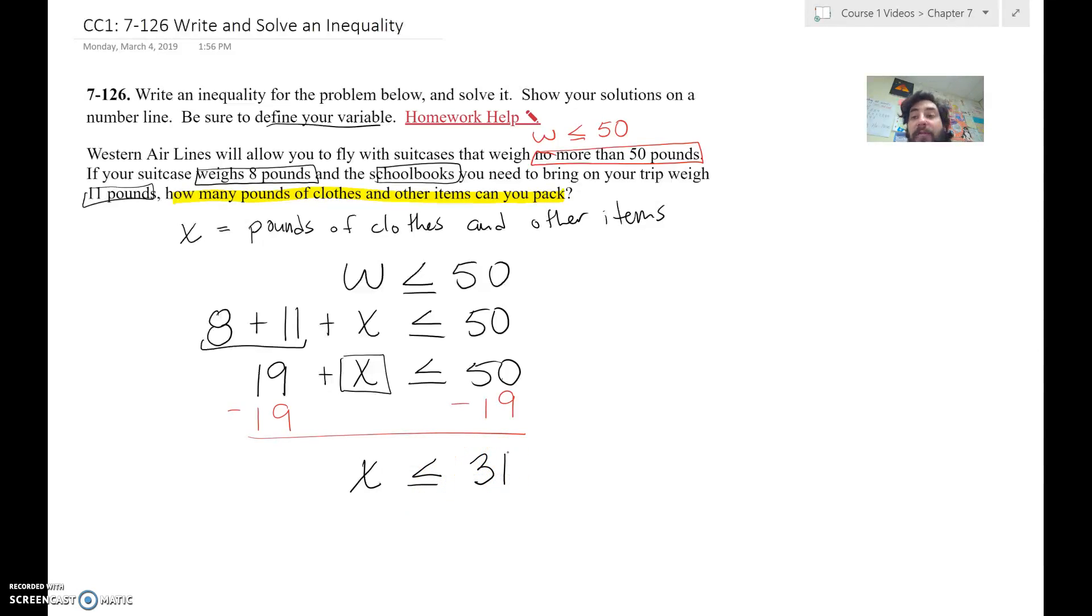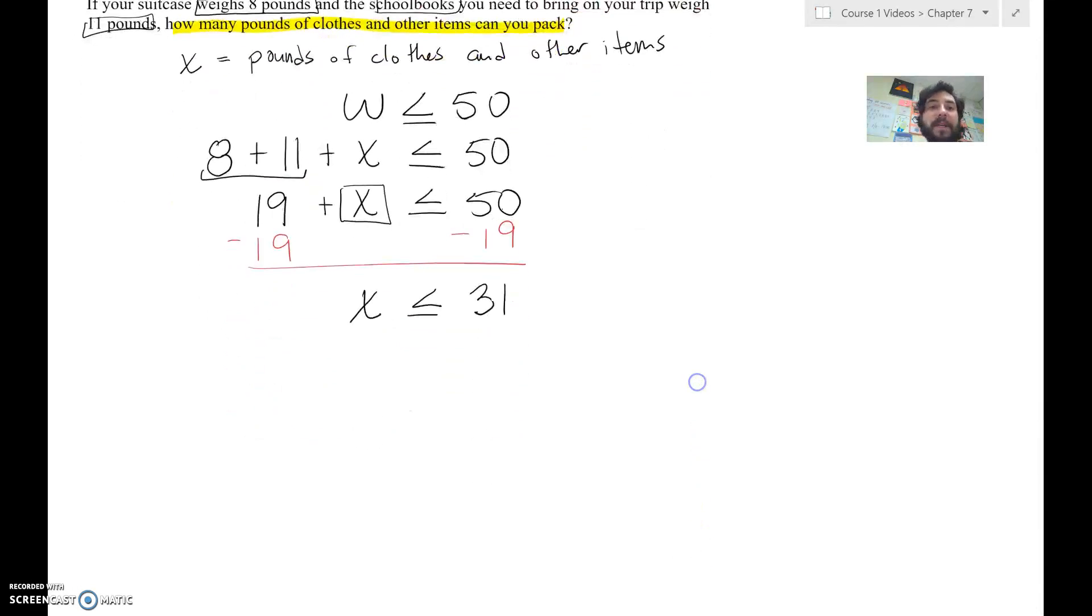We can have 31 pounds worth of clothes and other things. We can have 30 pounds. We can have 29. We can have 2. We can have 0 pounds of other stuff. Right? Probably be a pretty interesting trip if you don't bring any other items besides your school books. But those are your solutions.